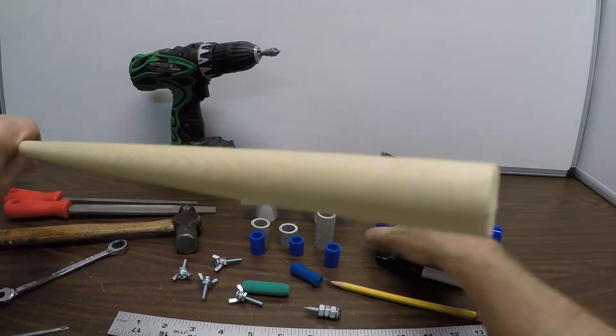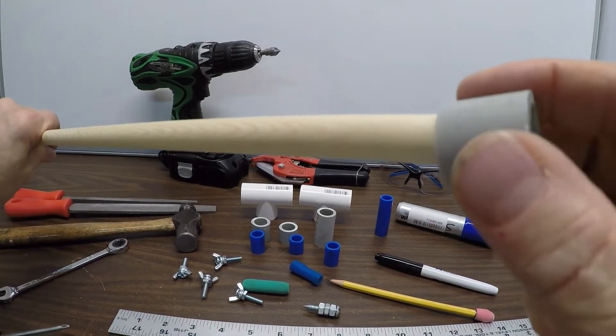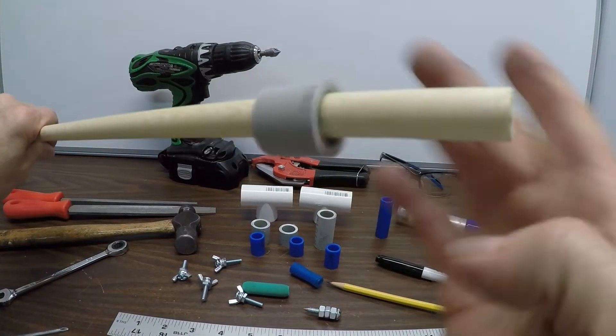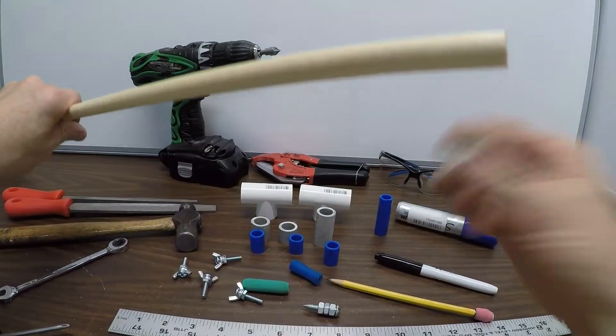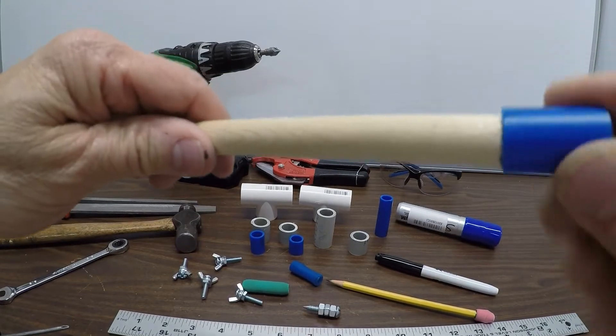Half-inch dowel rod. You would think a half-inch PVC pipe would be a really tight fit. Well guess what? Not at all. And that's why I'm using the shark bite tubing for kind of a spacer.